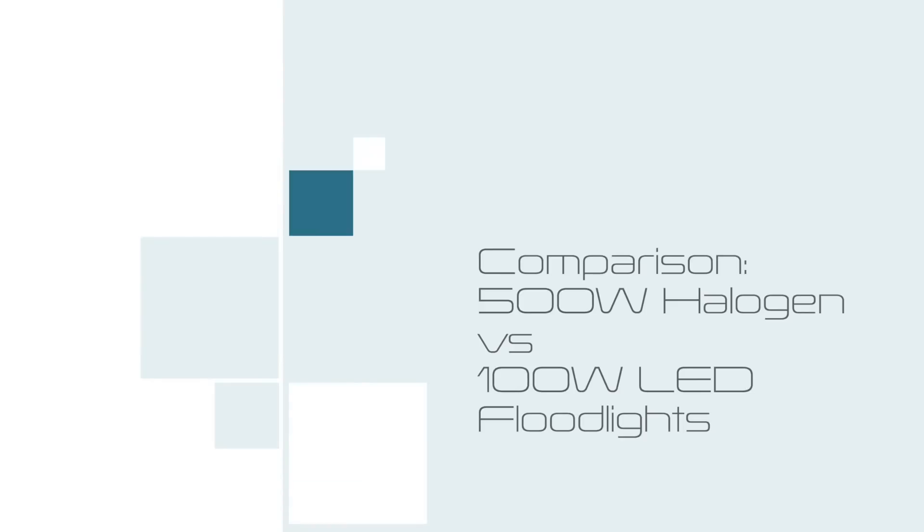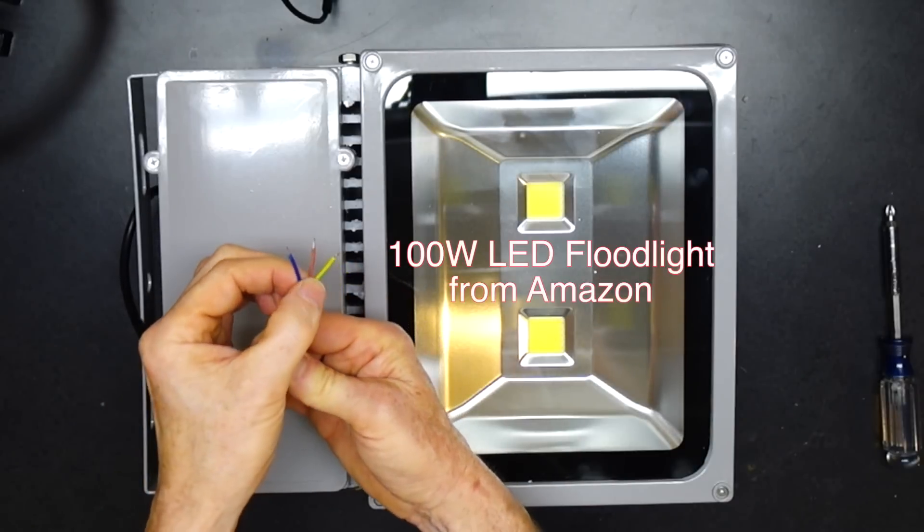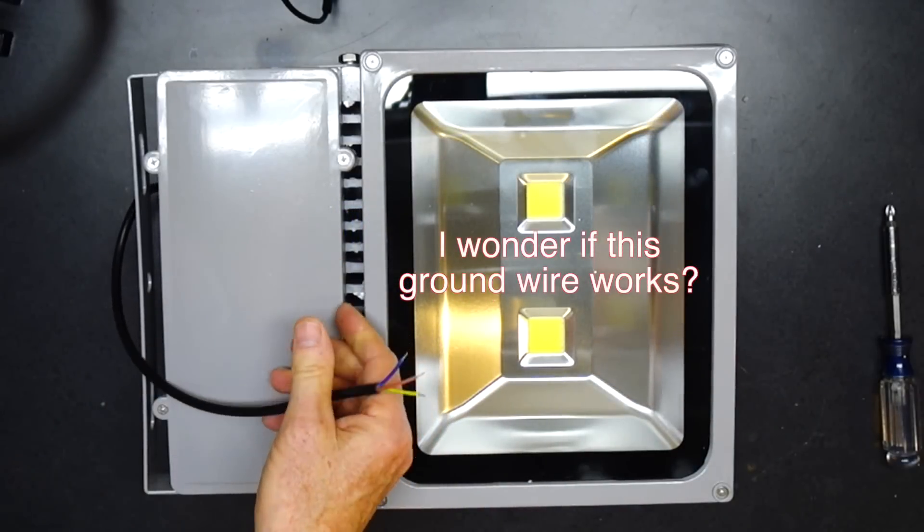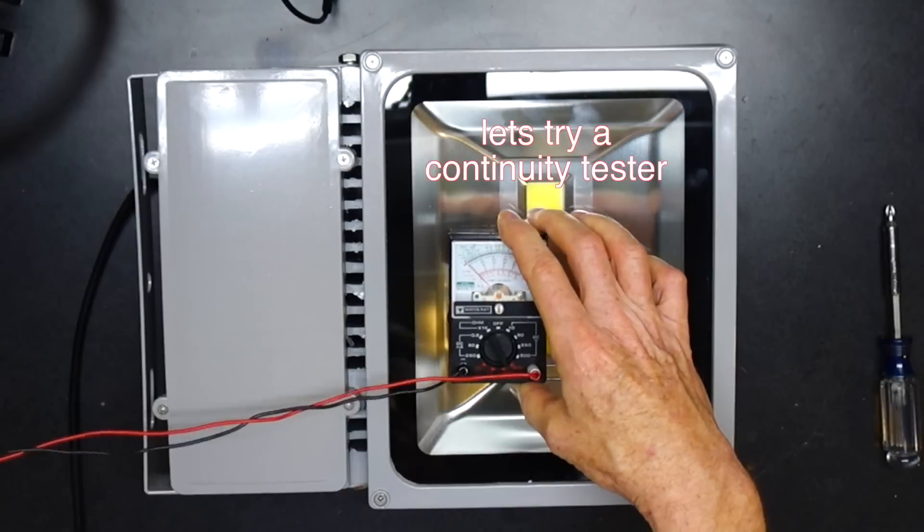I'm going to be comparing a 100 watt LED floodlight to a 500 watt halogen light. I'd seen some YouTube reviews of this product from Amazon and they weren't really good about the construction quality, light output, and in fact just how they're built.